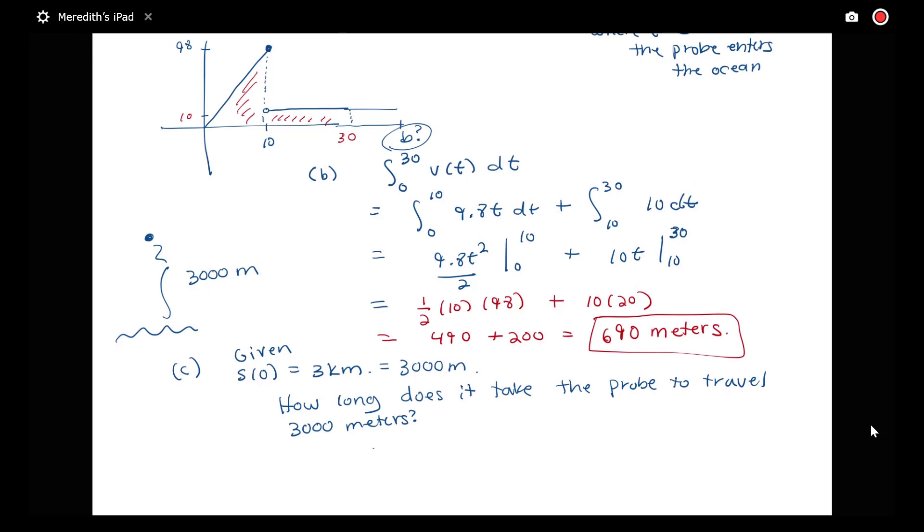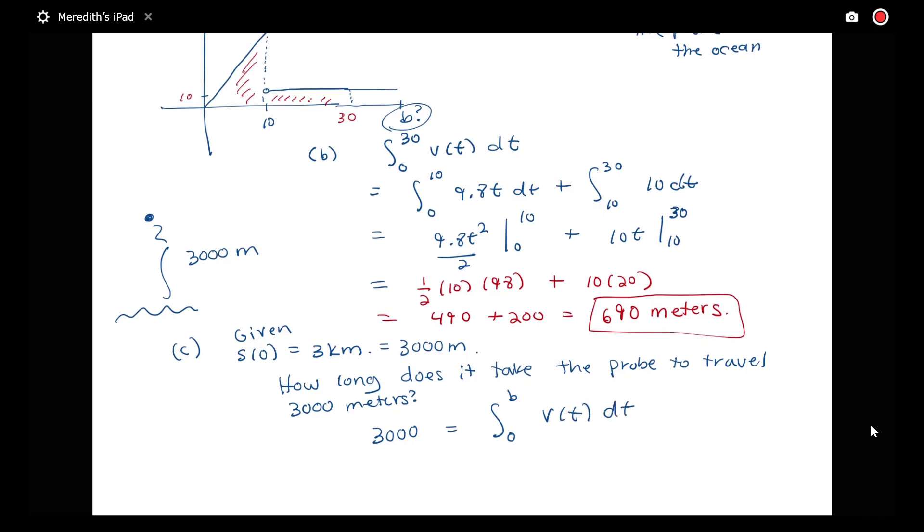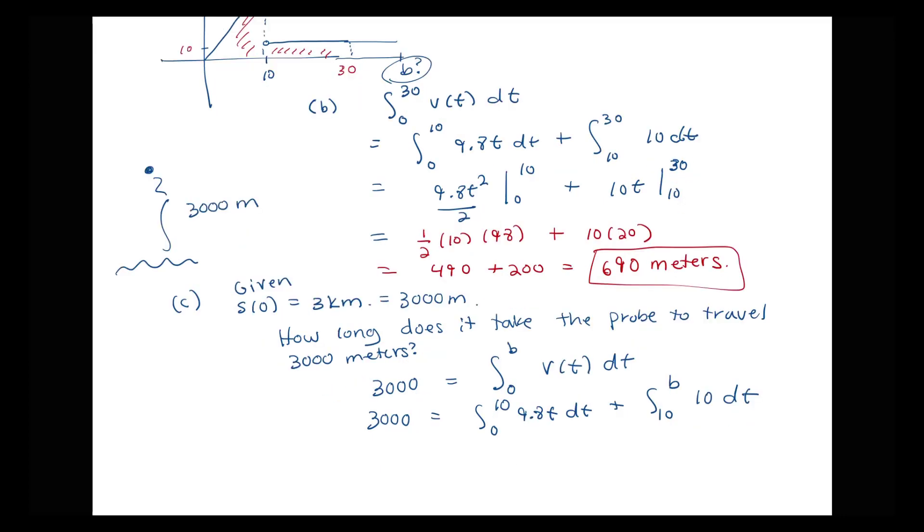So we have the equation that 3,000 meters will be the distance traveled over the integral from 0 up to some time B of V(t). So we're looking at 3,000 equals an integral from 0 to 10 of 9.8t dt plus an integral from 10 to B of 10 dt. And we're trying to solve for the time t = B.